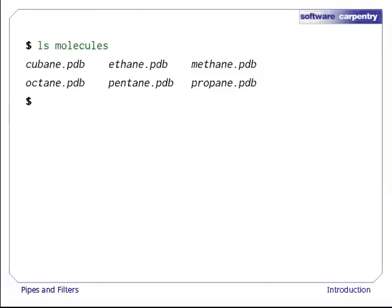We'll start with a directory called molecules that contains six files describing some simple organic molecules. The .pdb extension indicates that these files are in protein databank format, a simple text format that specifies the type and position of each atom in the molecule.